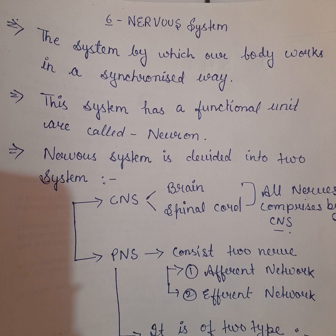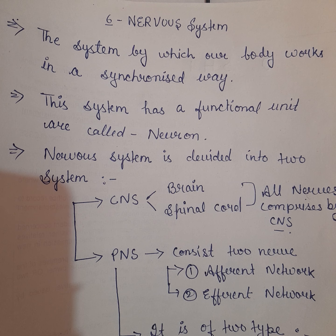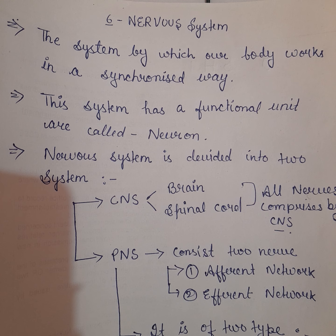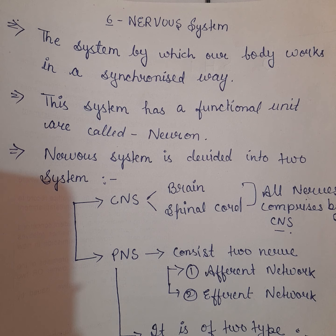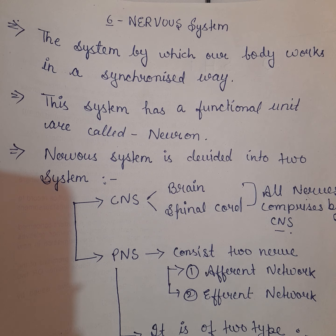Hello everyone, let's continue our topic of human physiology. Last topic is nervous system. This system is the means by which our body works in a synchronized way — matlab ki hamari body particular step by step work karti hai. Is system ki functional unit hoti hai neuron, jaise excretory system mein nephron hoti thi.